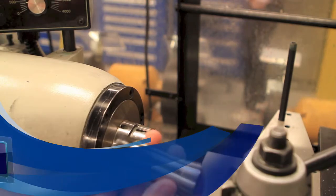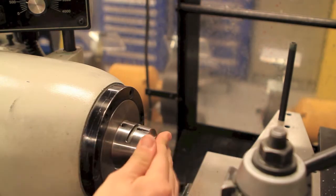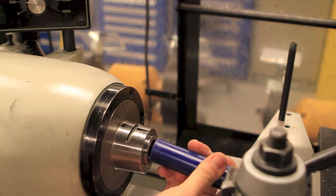The first step is to insert a collet, making sure the groove is in alignment with a notch on the machine. Next, insert your part, in this case a wax rod.